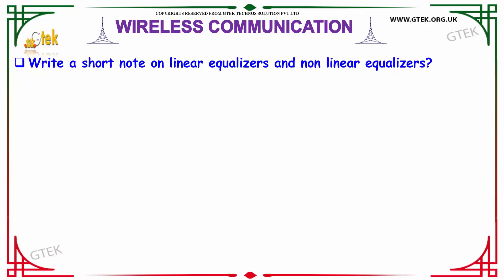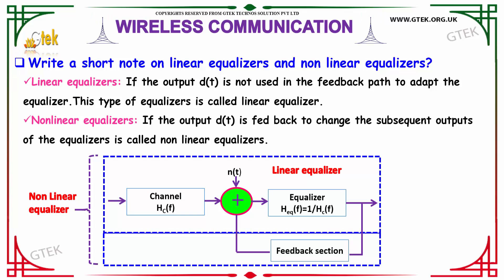Write a short note on Linear Equalizer and Non-Linear Equalizer. If the output DT is not used in the feedback path to adapt the equalizer, this type of equalizer is called as Linear Equalizer. In terms of Non-Linear Equalizer, if the output DT is fed back to change the subsequent outputs of the equalizer, then it is called as Non-Linear Equalizer.